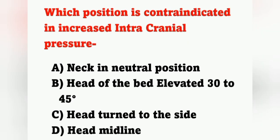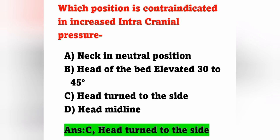Next question: Which position is contraindicated in increased intracranial pressure? Options: option A, neck in neutral position; option B, head of the bed elevated 30 to 45 degrees; option C, head turned to the side; option D, head in midline. The position contraindicated in increased ICP is head turned to the side — option C is the correct answer. During increased ICP, we should keep the patient in neutral or midline position and not turn the head. We can keep the head elevated up to 30 degrees to help reduce the ICP.